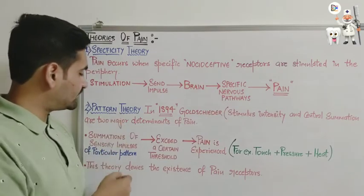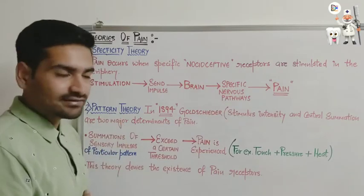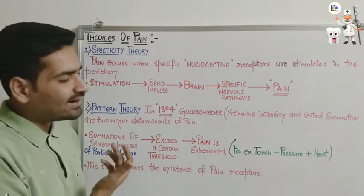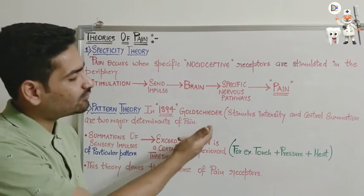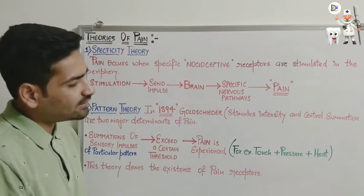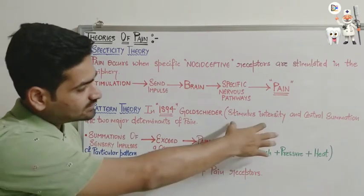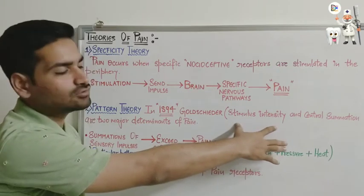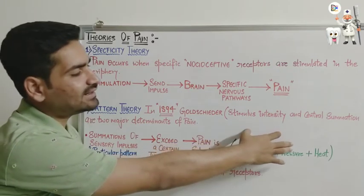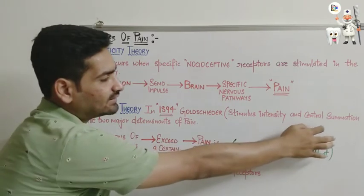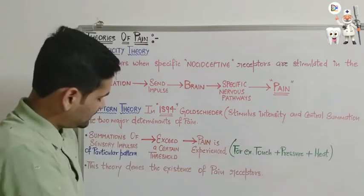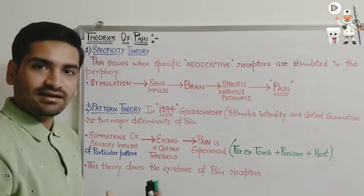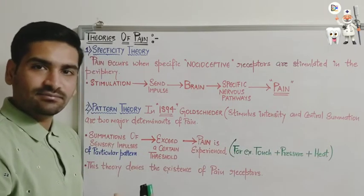Next is the pattern theory. The pattern theory was given in 1894 by Goldscheider. It states that the stimulus intensity and the central summation — whatever the stimulus intensity is — are the determinants of pain.